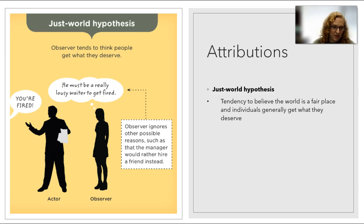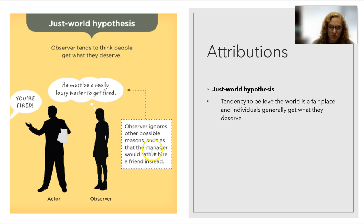Here's an example: we're the observer watching a waiter, and the manager comes over and says 'you're fired.' We think, 'well, he must be a terrible waiter because he got fired.' We tend to believe people get what they deserve — he got fired, so he must have deserved it, he must be terrible at his job. We tend to ignore other possible reasons, such as the manager wanting to hire a friend instead, or just not liking this guy for some reason. This is the tendency to believe the world is a fair place and people generally get what they deserve.